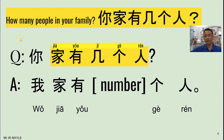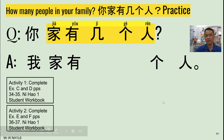We're going to look at a slide in a moment, but this is the structure. The person goes here, and then you would ask 家有幾個人? So 你 could change to another pronoun like 他, or even a name. Then you would put the appropriate pronoun or person's name in the response. So if we have 你家有幾個人, we change 你 to 我, and everything stays the same, except 幾 gets changed for the number of people. Let's have a look at an example in the next slide.